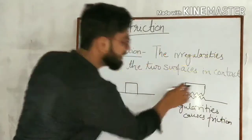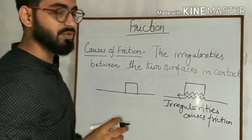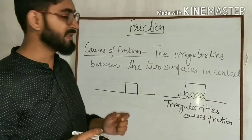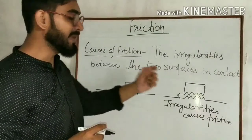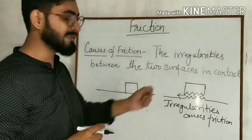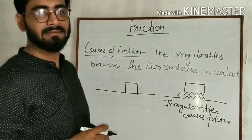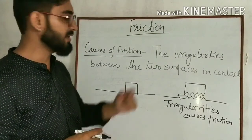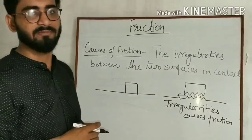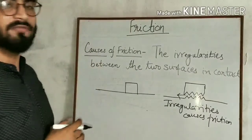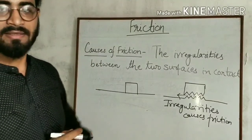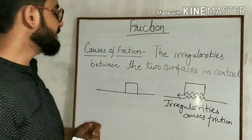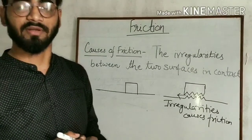In order to move an object, you need a force which is big enough to overcome the force of friction. Then only the object will move. The cause of friction is the irregularities between the two surfaces in contact.